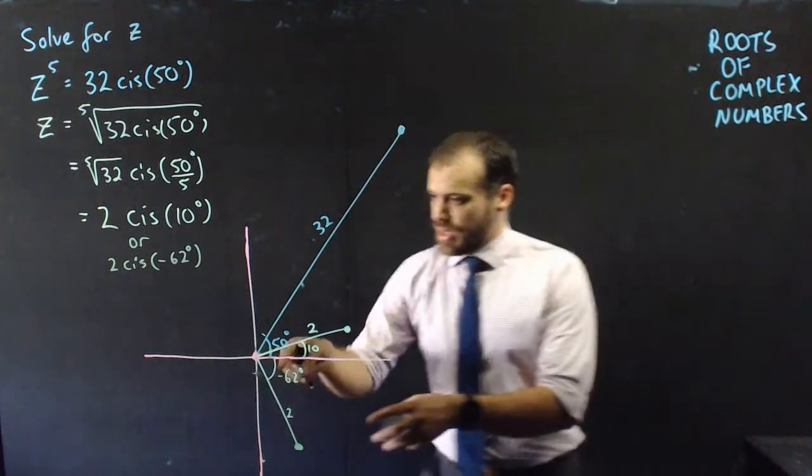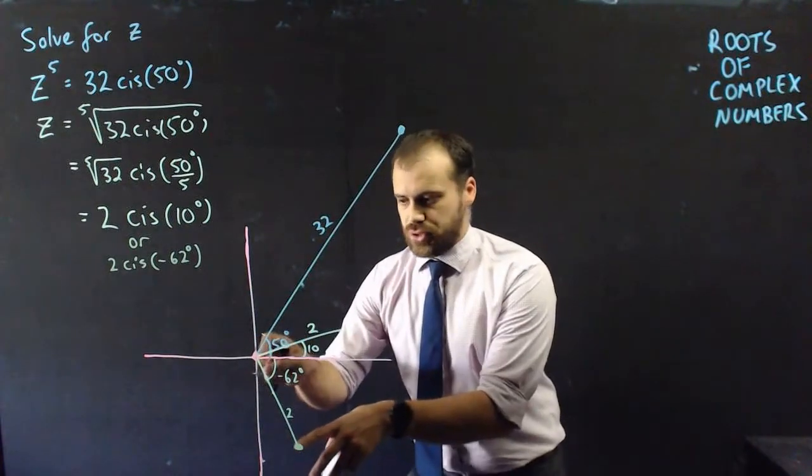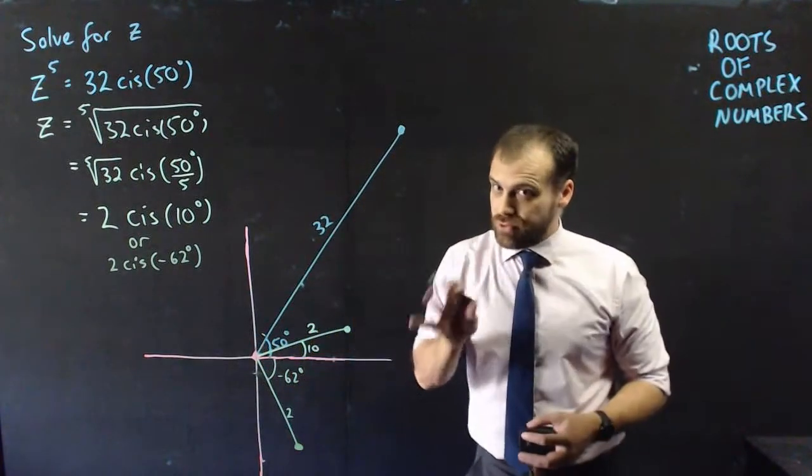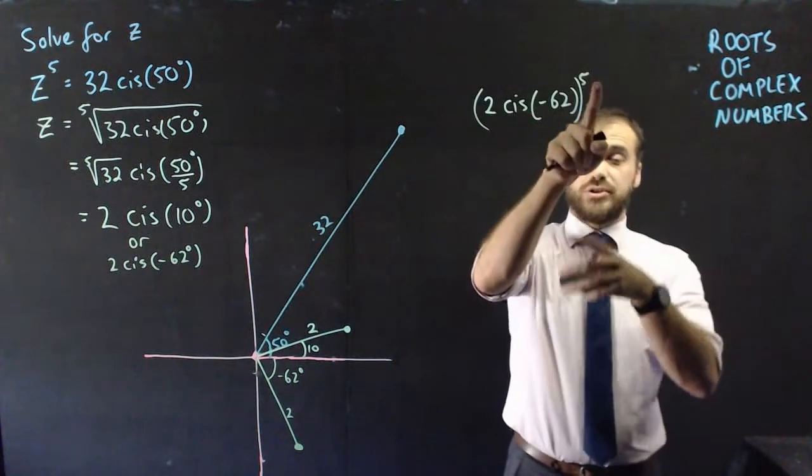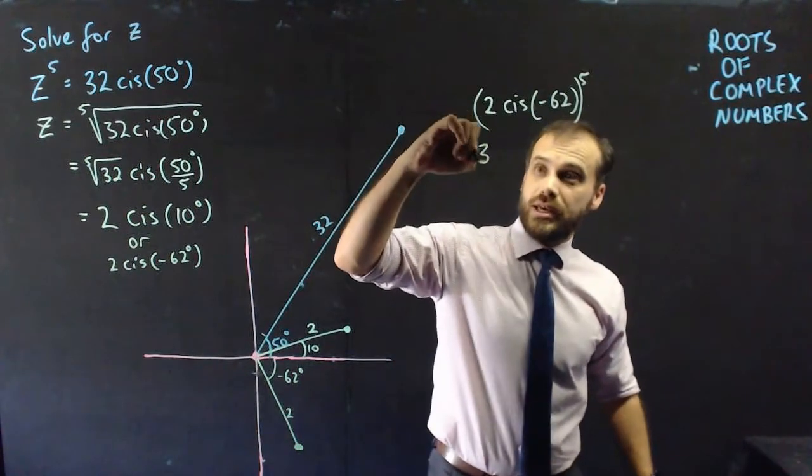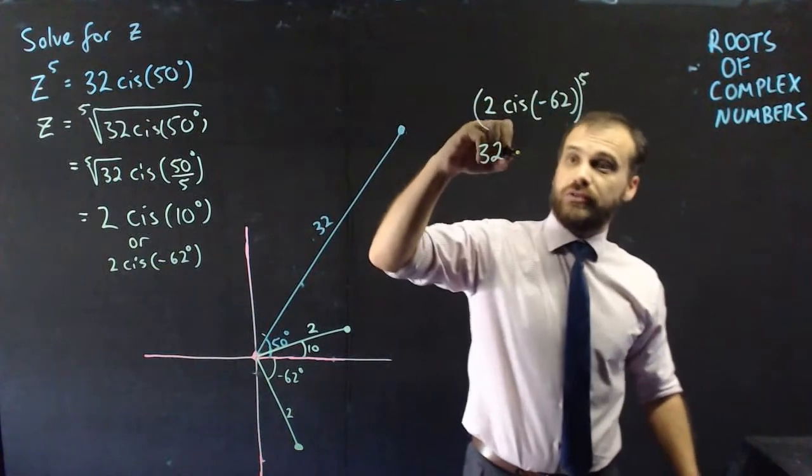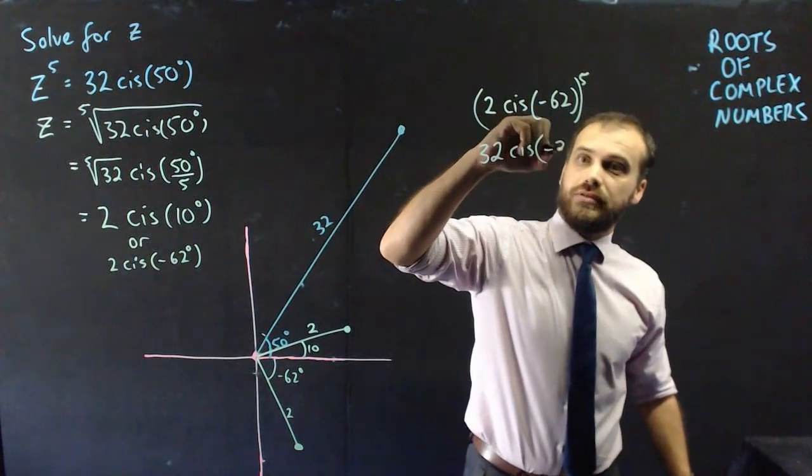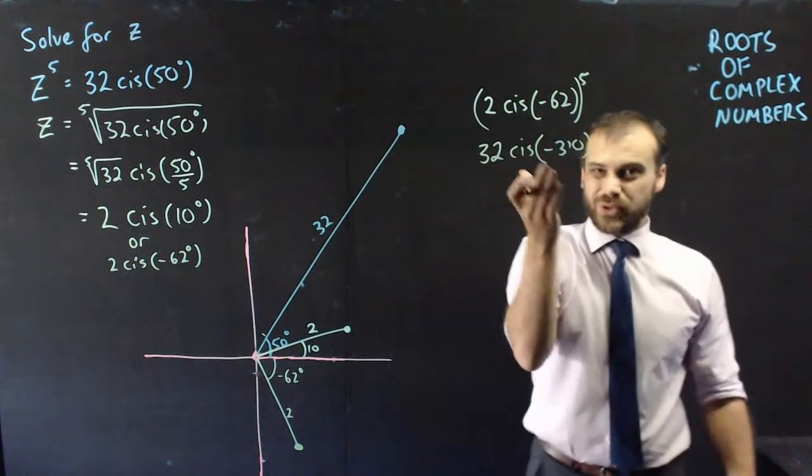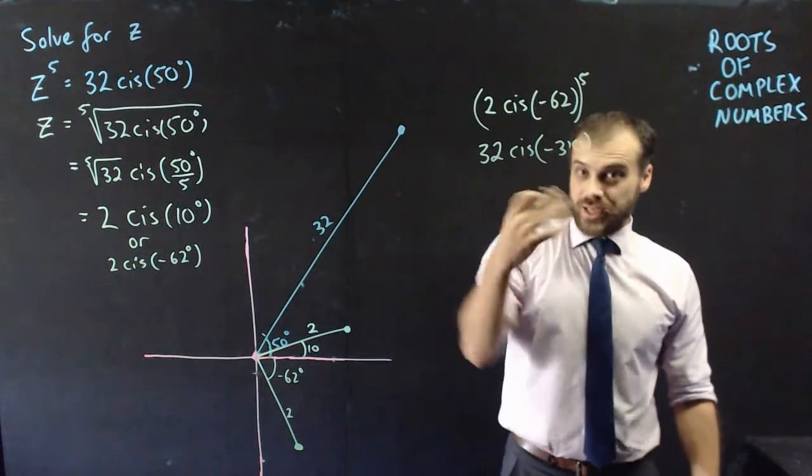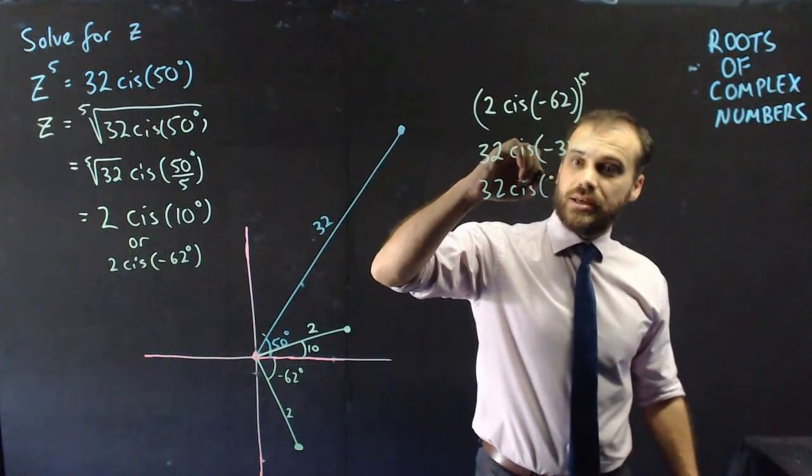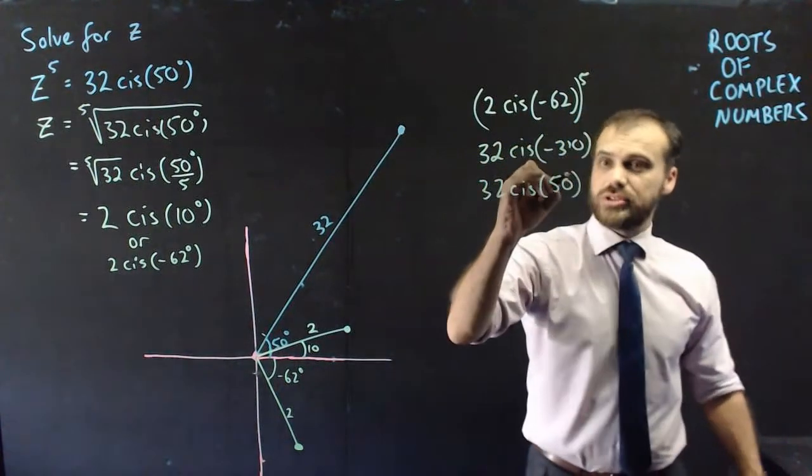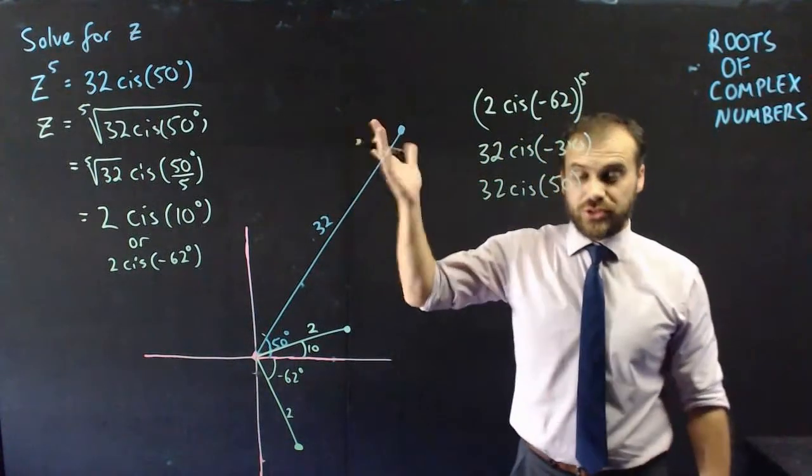That number 62 is going to lead us to our second answer. This is our second answer: negative 62, 2. You might be a little bit confused, but look, it works. If we took that answer, 2 cis negative 62 to the power of 5, we would get 32, 2 to the power of 5, cis negative 310. And what's negative 310? It's just positive 50, which means that that is another solution.